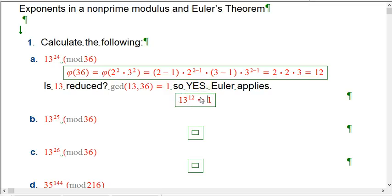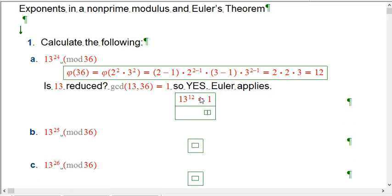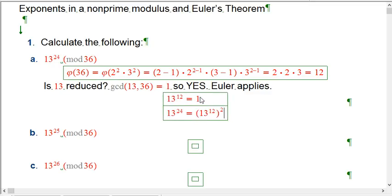Now, just a little bit of rules of exponents tells me 13 to the 24 is just that guy squared, and that's still 1. So this is like the situation we had in Fermat, where there's this periodicity, this repetition, now it's mod 12, because that's the key number that's controlling the exponents, the phi function.